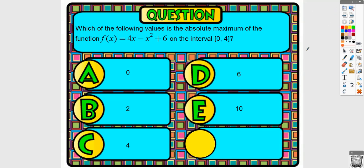For this problem asking for the absolute maximum on a closed interval, take the derivative: 4 minus 2x, set it equal to zero to get x equals 2. Then find f(0), f(2), and f(4). The largest of those three values is the maximum, which should be 10. The most common mistake is only plugging in the critical point and forgetting to check the endpoints — the maximum or minimum could occur at an endpoint, so always check those.